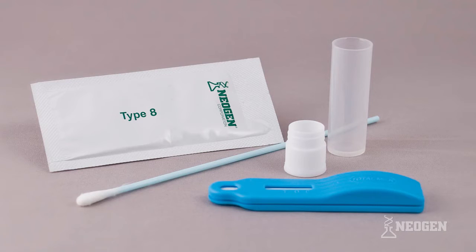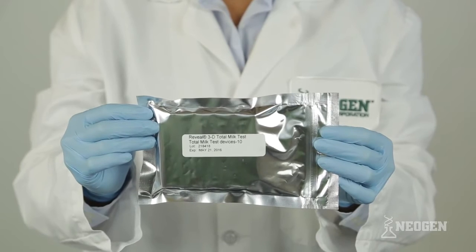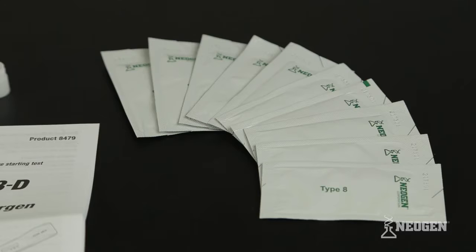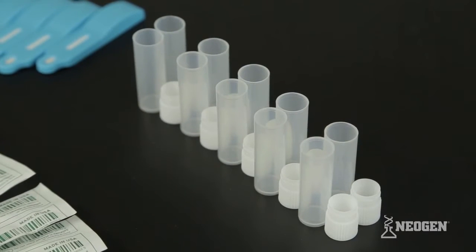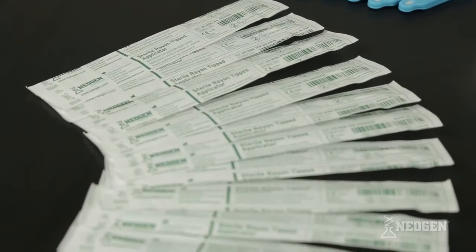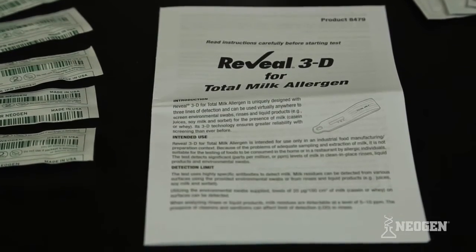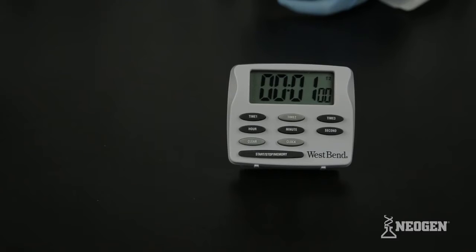The materials provided with Neogen's Reveal 3D for total milk allergen test include one foil pouch containing 10 Reveal 3D for total milk allergen devices, 10 sachets containing extraction buffer, 10 sample tubes and caps, 10 individually packaged sterile swabs with break-off tips, written test instructions, and additionally a timer is necessary.